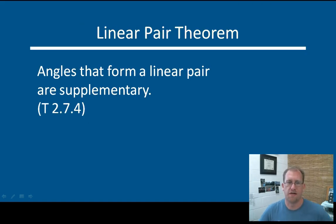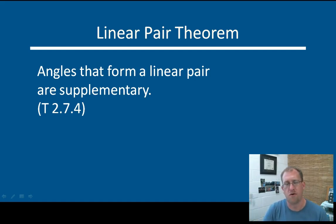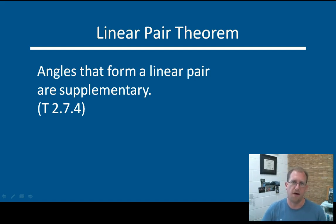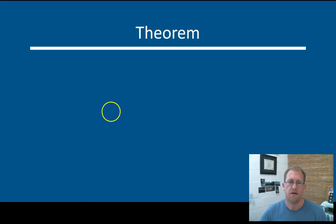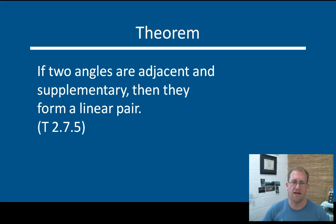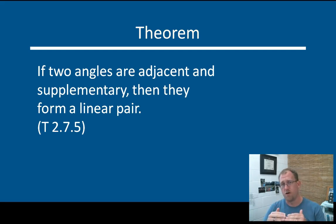A linear pair of angles are definitely supplementary — a linear pair are two angles adjacent to each other, the sum of which is 180 degrees. Angles that form a linear pair must be supplementary. You can't have one line with a ray coming off of it and have the two angles formed not equal 180 degrees. Another theorem: if two angles are adjacent and supplementary, then they form a linear pair. It's going backwards with the same idea. If they are a linear pair, then they are supplementary; if they're adjacent and supplementary, then they are a linear pair. We're just saying the same concept in many different ways.